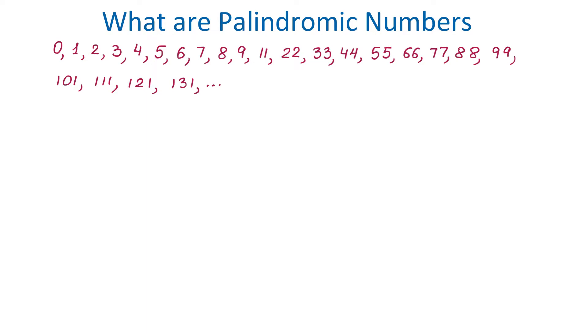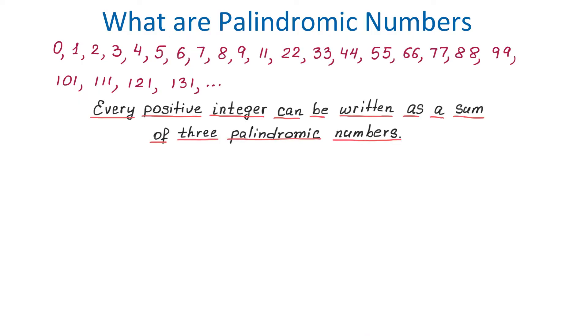A recent proof done in mathematics shows that we can take any positive integer and we can write it as a sum of three palindromic numbers. For example, we can write the number 346 as 11 plus 22 plus 313. As you see, all these three numbers represent palindromes.